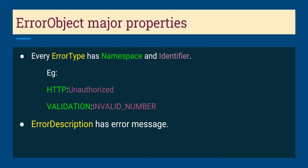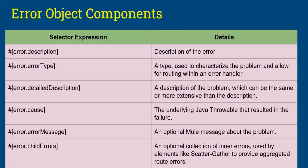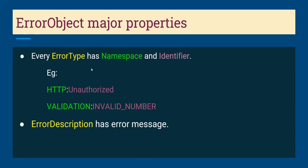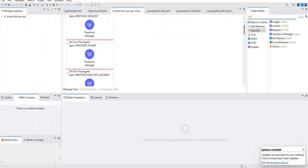The two major properties to focus on are error description and error type. Error description is a text message with a complete description of your error. Error type has two parts: namespace and identifier. For example, 'HTTP:UNAUTHORIZED' — HTTP is the namespace and UNAUTHORIZED is the identifier. Another example: 'VALIDATION:INVALID_NUMBER' — VALIDATION is the namespace and INVALID_NUMBER is the identifier.